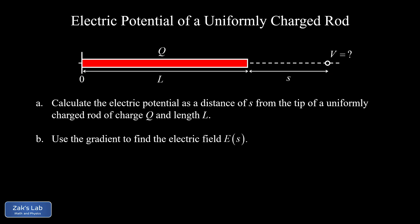In this video, we're calculating the electric potential at a distance of S from the tip of a uniformly charged rod with a total charge of Q and a length of L. Notice in the picture, we set the origin at the left end of that rod, and then we have a distance of S between the right tip of that rod and the observation point. Now, one really cool thing about this problem is once we get the electric potential as a function of S, we can use the gradient to compute the electric field at that observation point, and then compare that electric field to our previous result that we got by directly integrating with Coulomb's law.